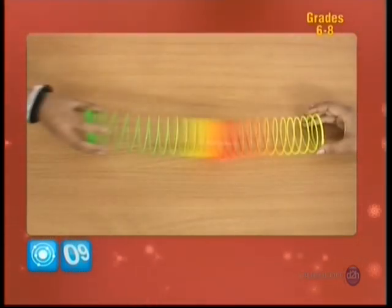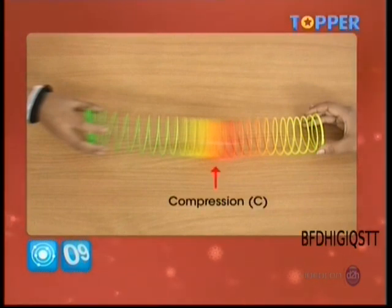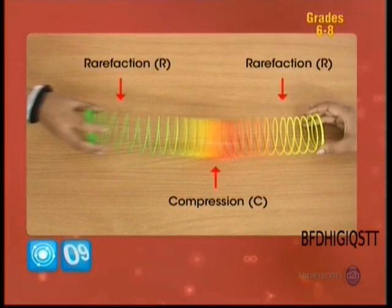The regions where the coils come closer are called compressions, C, and the region where the coils are further apart is called rarefaction, R.